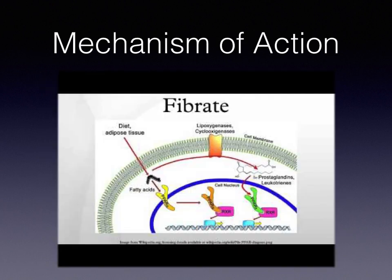Mechanism of Action: The exact mechanism of action of Phenofibrate is not completely understood. However, Phenofibric acid, the active metabolite of Phenofibrate, produces reduction in total cholesterol, LDL, apolipoprotein B, total triglycerides, and triglyceride-rich lipoprotein in treated patients. Treatment with Phenofibrate also results in an increase in HDL. Phenofibric acid's effects have been explained by the activation of peroxisome proliferator-activated receptor alpha (PPAR-alpha).